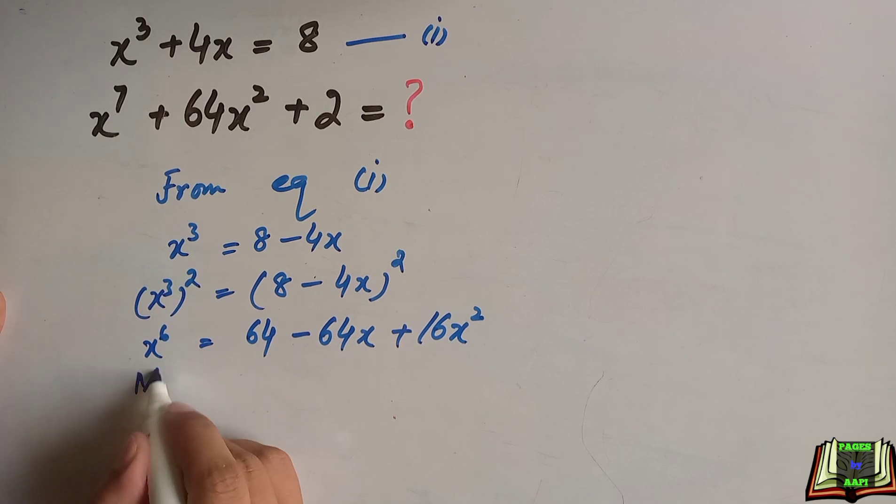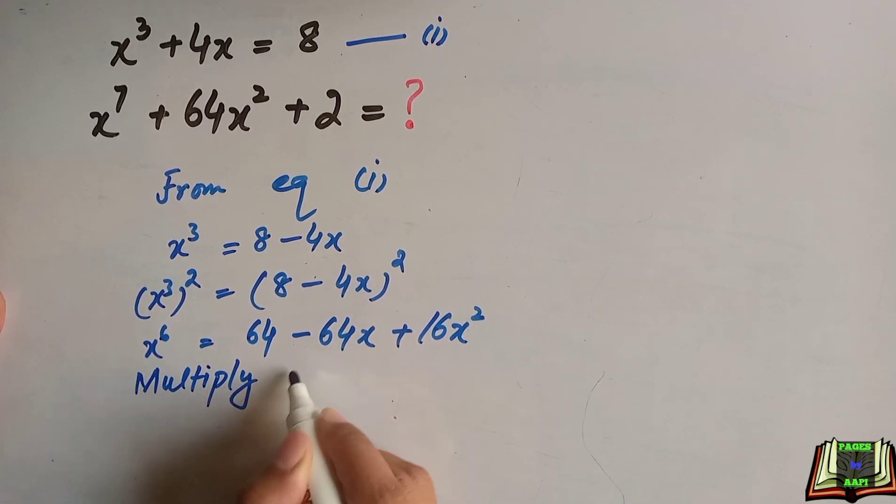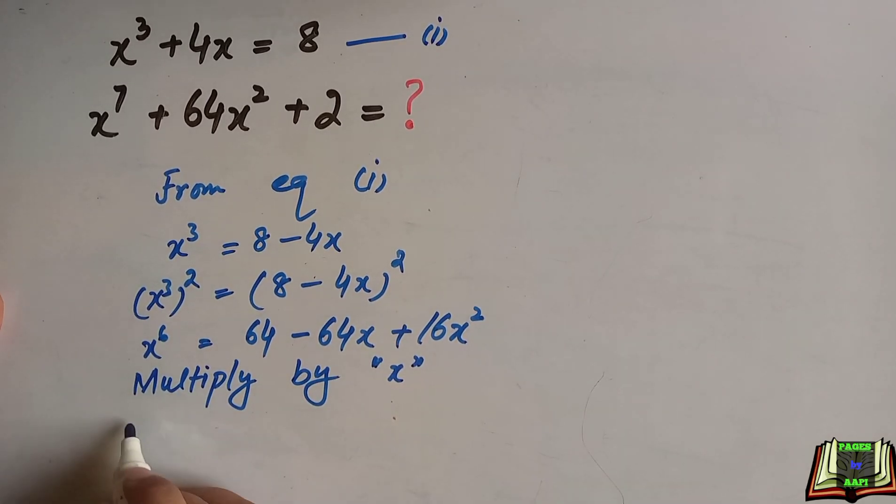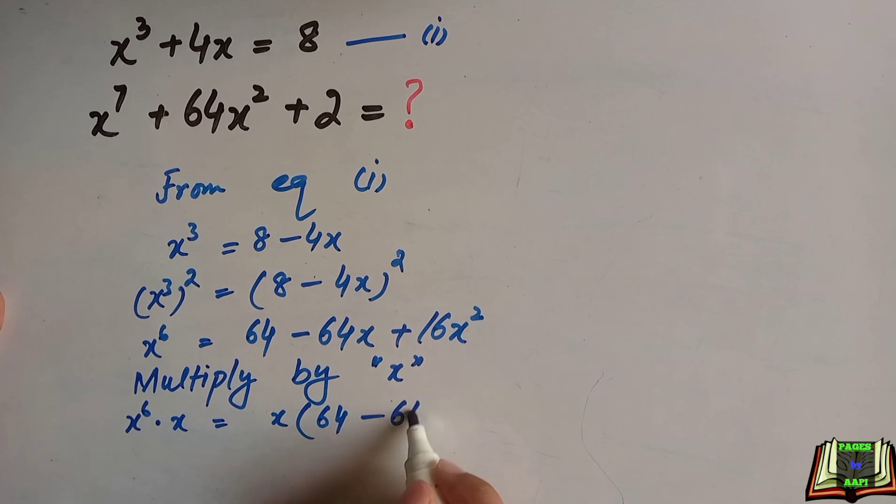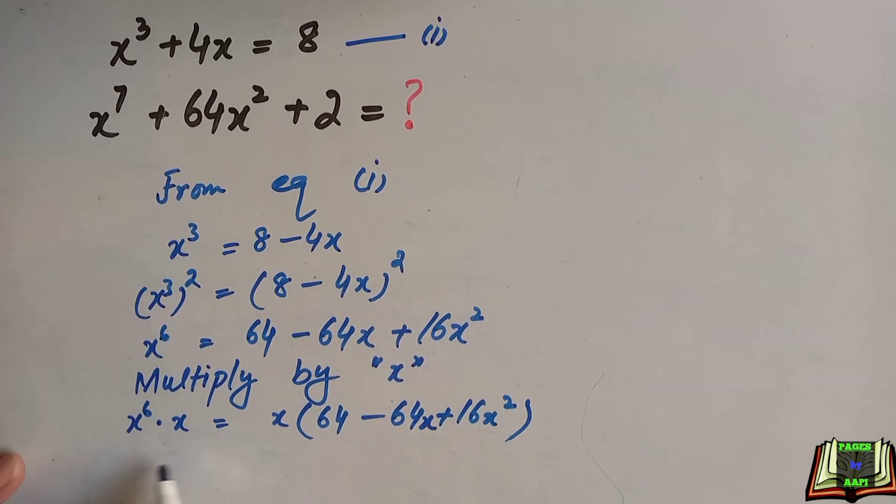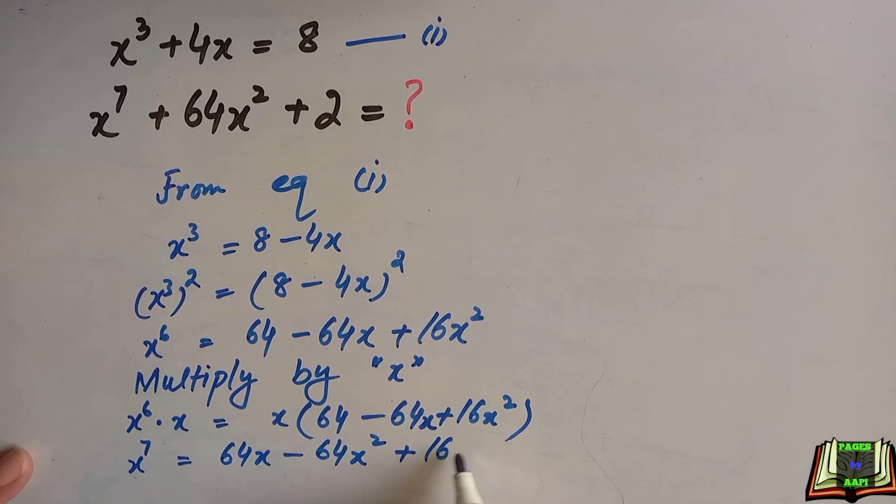In the next step, we'll multiply this equation by x on both sides. We can write x⁶ · x = x · (64 - 64x + 16x²). This equals x⁷ = 64x - 64x² + 16x³.